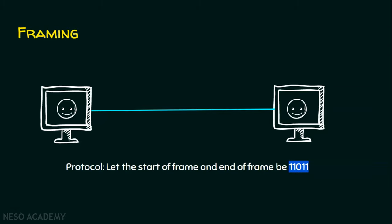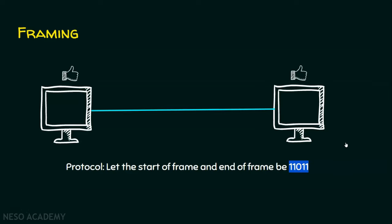When the sender computer receives a packet from the network layer, it adds a header and a trailer. In the header, it adds 11011, and in the trailer part it also adds 11011. There are other pieces of information added with the header and trailer, but this lecture focuses only on the start and end of the frame. Both computers agree upon this protocol, so communication can now be effective.